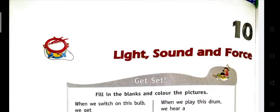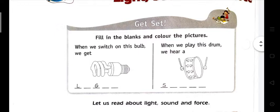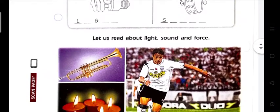Hello children, in this class we are going to learn about light, sound, and force. Let's start with fill-in-the-blanks and color the pictures. The first picture is a picture of a bulb — when we switch on this bulb we get light. When we play this drum we hear a sound. You have to color this bulb and drum.